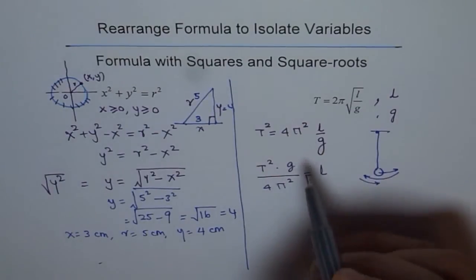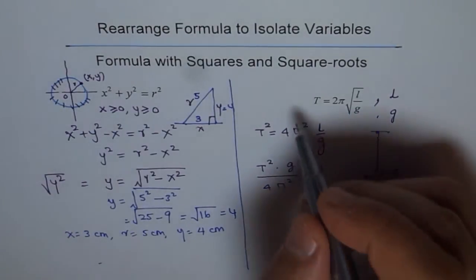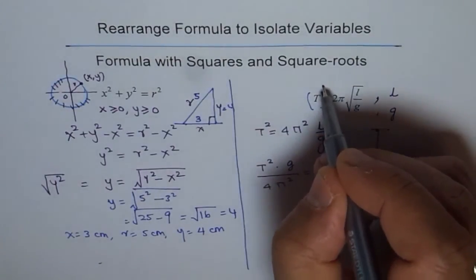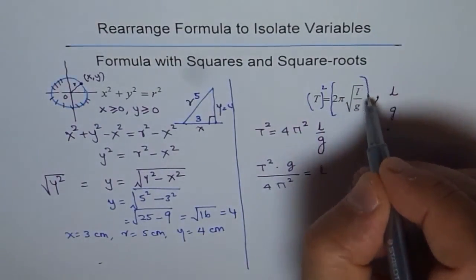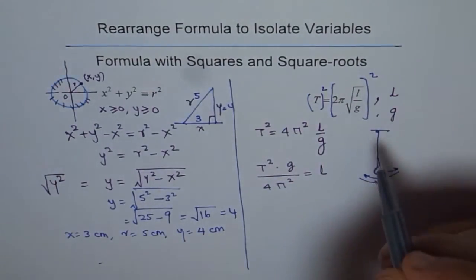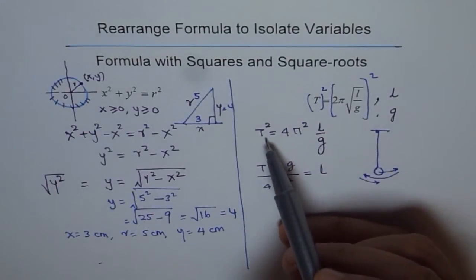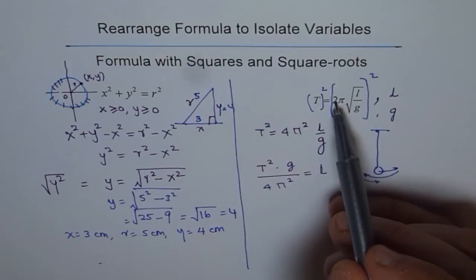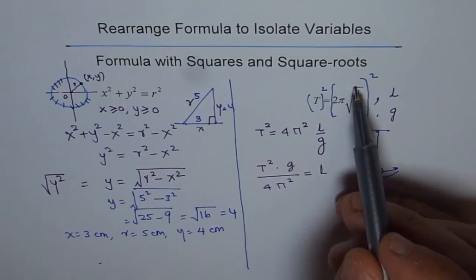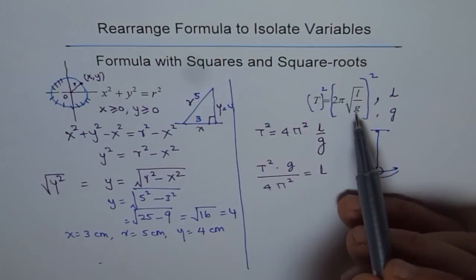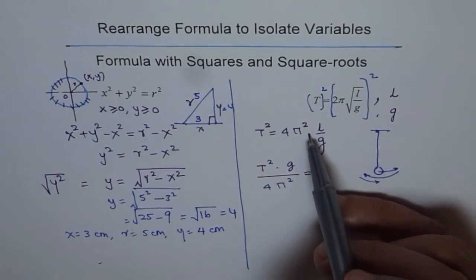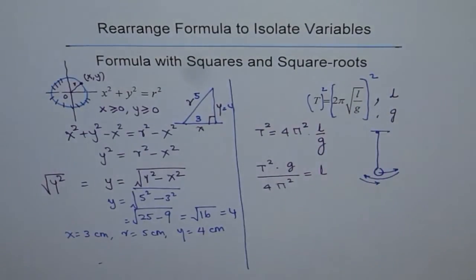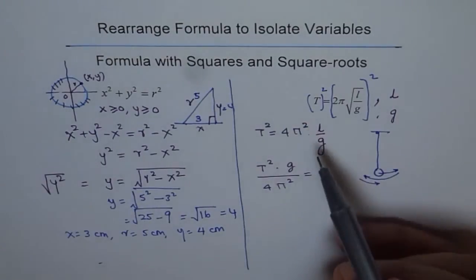Let me show you this step once again. I squared both sides—squared this and squared this. Here I got T², and when I square, everything gets squared. 2² is 4, π² is here, and the square of the square root is whatever was inside, so l/g. That is how I got it.